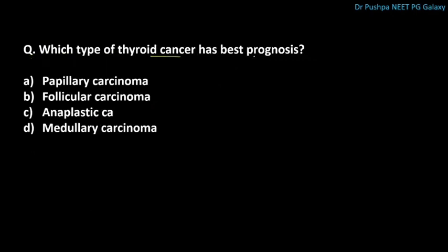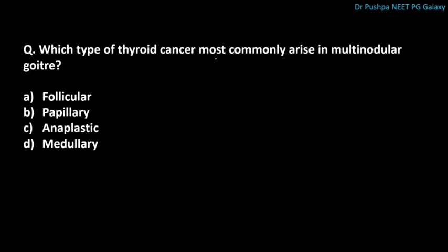Which type of thyroid cancer has the best prognosis? The correct answer is papillary carcinoma — the most common type overall, which usually spreads via lymphatics. Which type of thyroid cancer most commonly arises in multinodular goiter? The correct answer is follicular type. FNAC is not useful to differentiate adenoma and carcinoma in follicular type because it cannot detect capsular or vascular invasion.